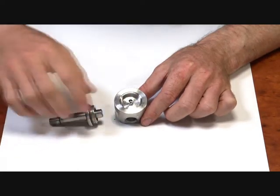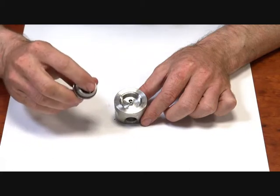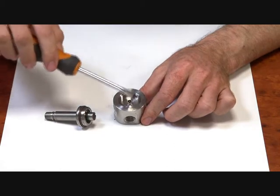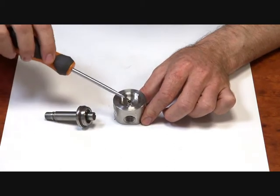To open, power is applied. The armature is pulled up by electromagnetic force. Now this hole is open here. So flow will pass through, come up, over and down.